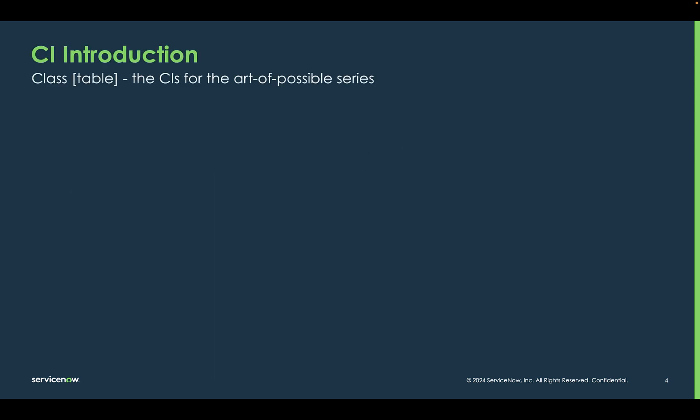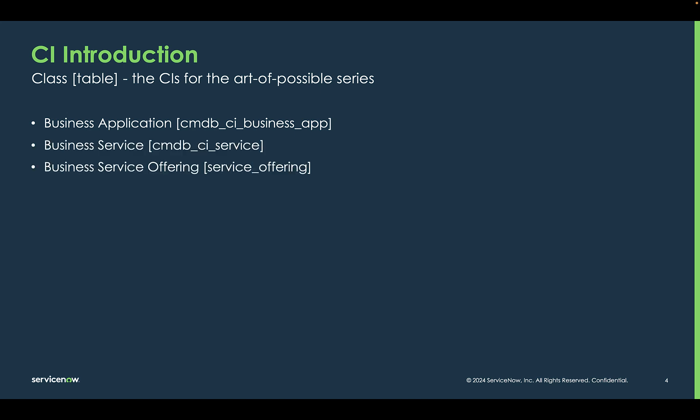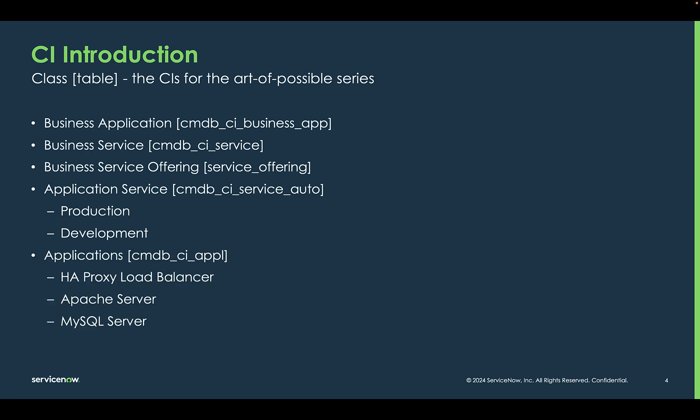Here are the classes that we will encounter as we do our five-part series. From the CSDM framework, in the design domain, we'll be using a business application. From the self-consumed domain, we'll be seeing business service and business service offerings. Then from the technical services domain — which is going to be the main focus of the five-part series — we'll look at how to build application services from the same stack using different techniques. We will have a production and a development service, focusing only on the production service. We'll also be looking at parts from the application CIs and from the server CIs.